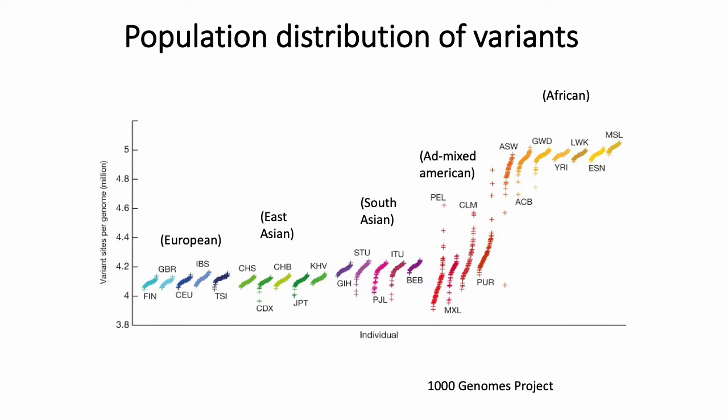The set of variants found in the human population differs substantially depending on which ethnicity you're talking about. Different ethnicities have different effective ages. For example, in the African population the number of genetic variants observed is much higher than in Europeans.